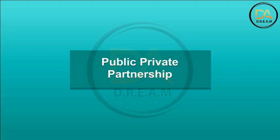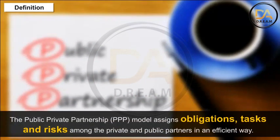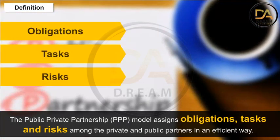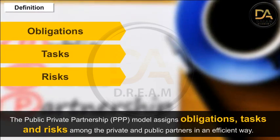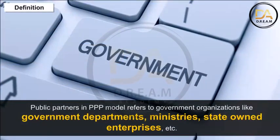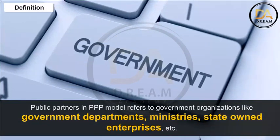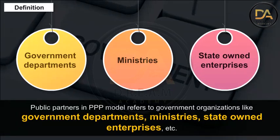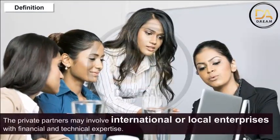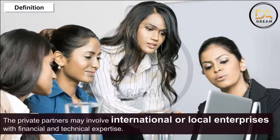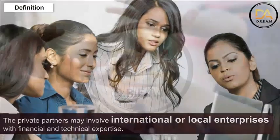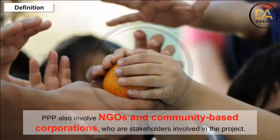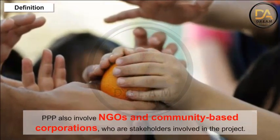Public-private partnership. Definition: The public-private partnership (PPP) model assigns obligations, tasks and risk among the private and public partners. In the PPP model, the public partners refers to government organizations like government departments, ministries, state-owned enterprises, etc. The private partners may be international or local enterprises with financial and technical expertise. PPP also involves NGOs and community-based corporations who are stakeholders involved in the project. Therefore, PPP is the relationship between private and public entities in the milieu of infrastructure and other services.